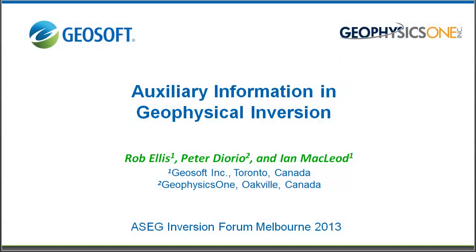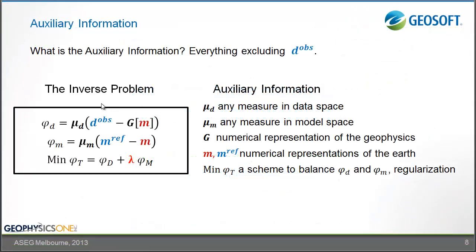Hello, this is Rob Ellis from GeoSoft and I'm giving a presentation on Auxiliary Information in Geophysical Inversion at the ASEG Inversion Forum in Melbourne. Let's look at the inverse problem and break it down into its core components. One core component is we have our geophysical data and a numerical method for calculating the geophysical response given a particular Earth model. Given a predicted response and observed data, we measure the difference between those two datasets, giving us a misfit measure referred to as phi sub d.